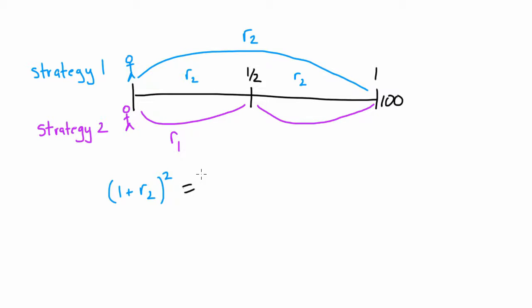And that rate of return has to be equal to investing for six months at R1, and then reinvesting those proceeds for another six months. The rate that we're going to get for those following six months — that six-month period starting in six months — we don't know it today, but we know that whatever it is, these two rates of return have to be identical.